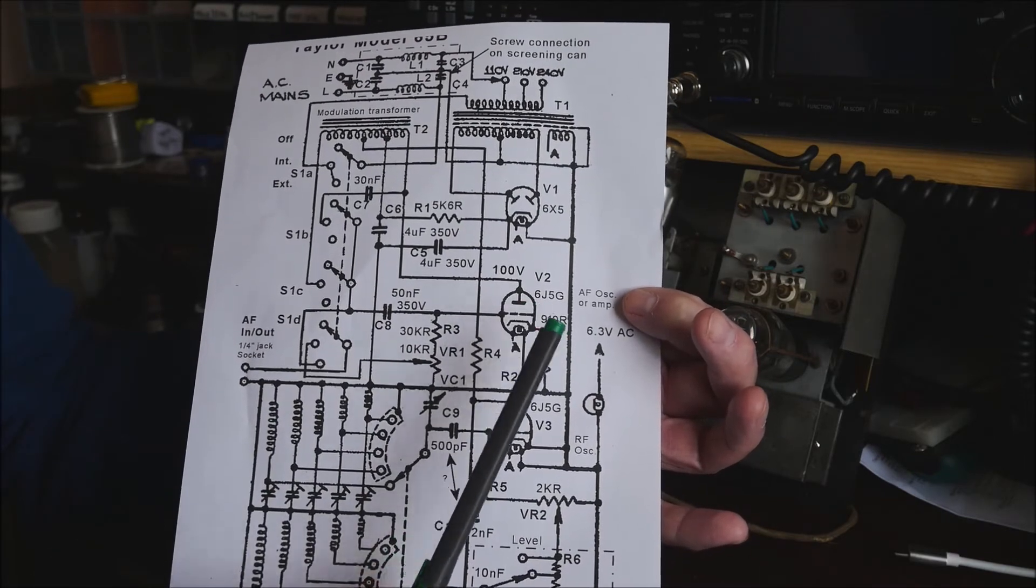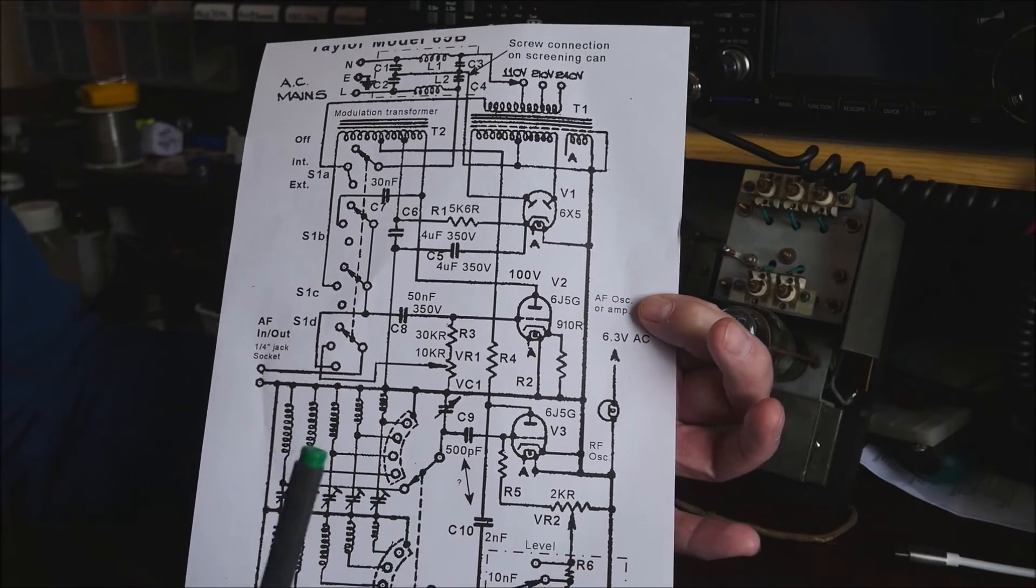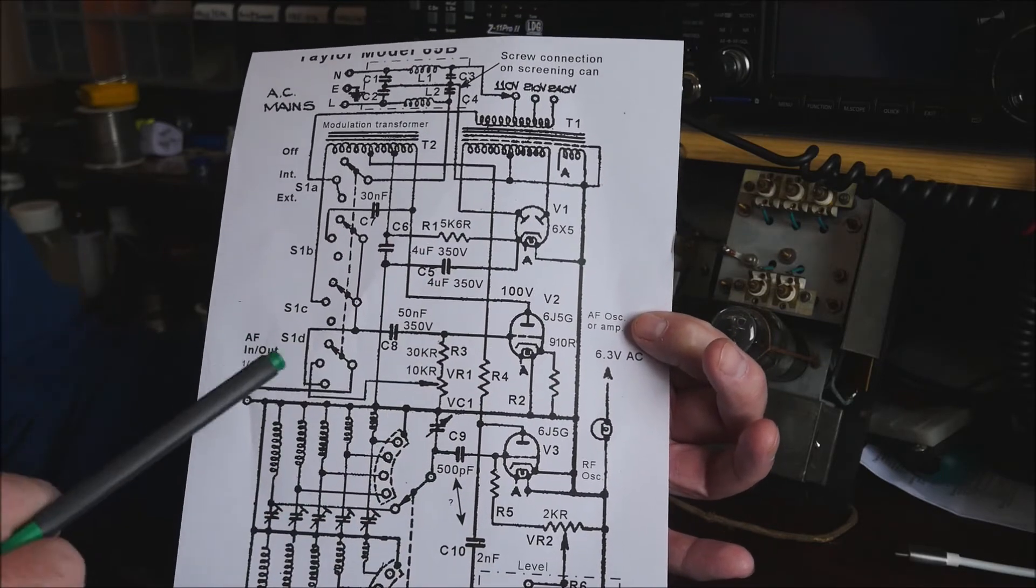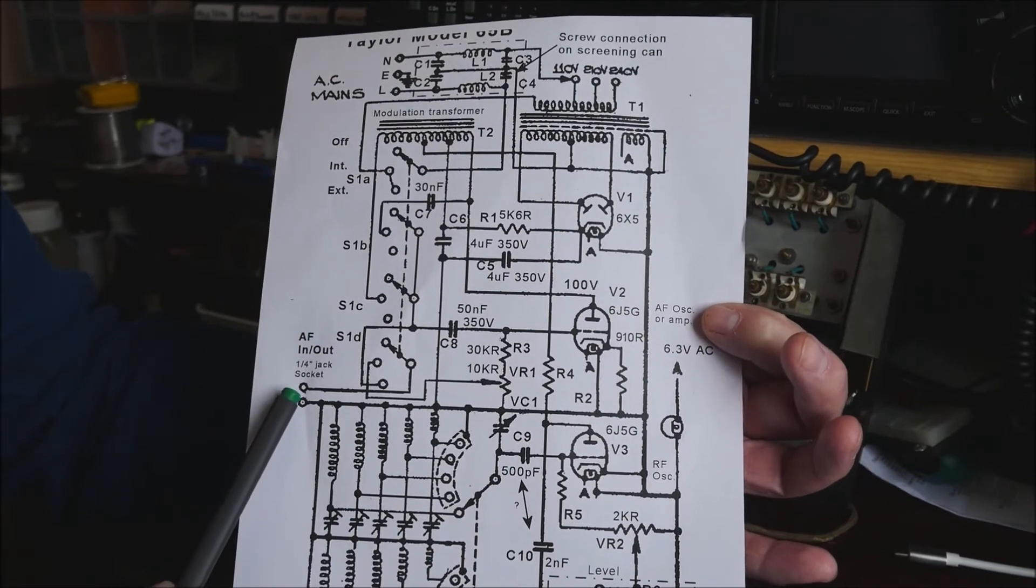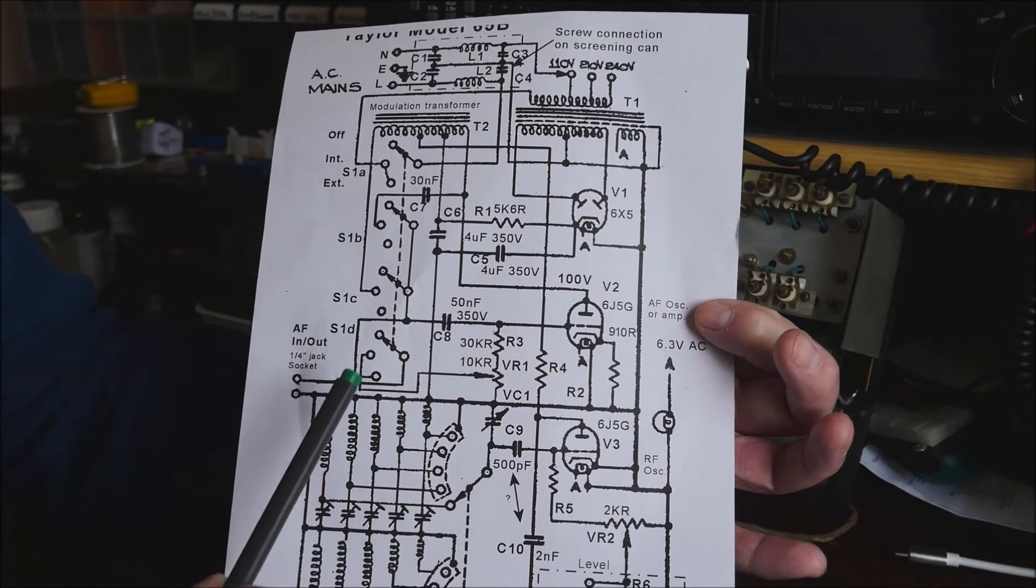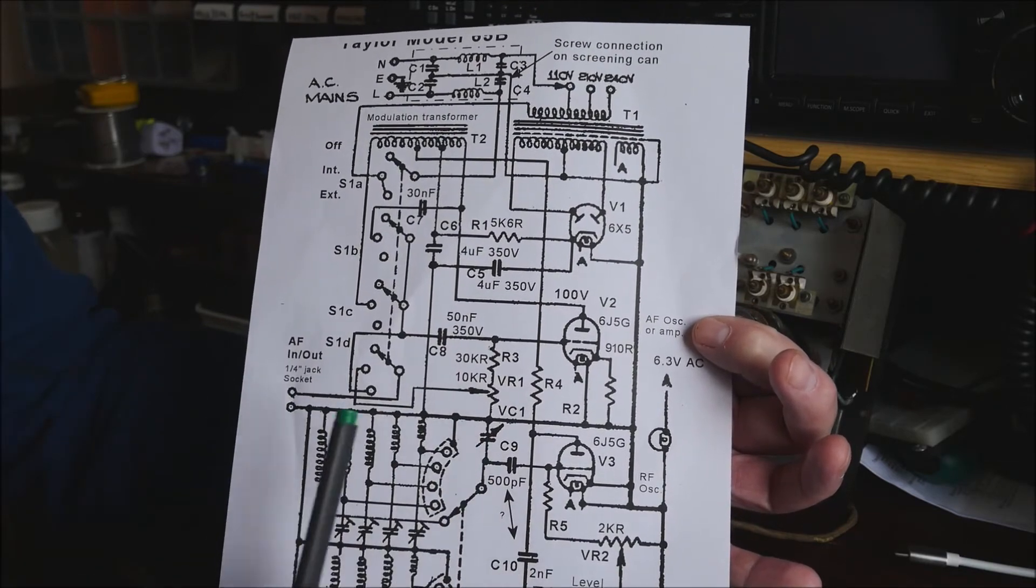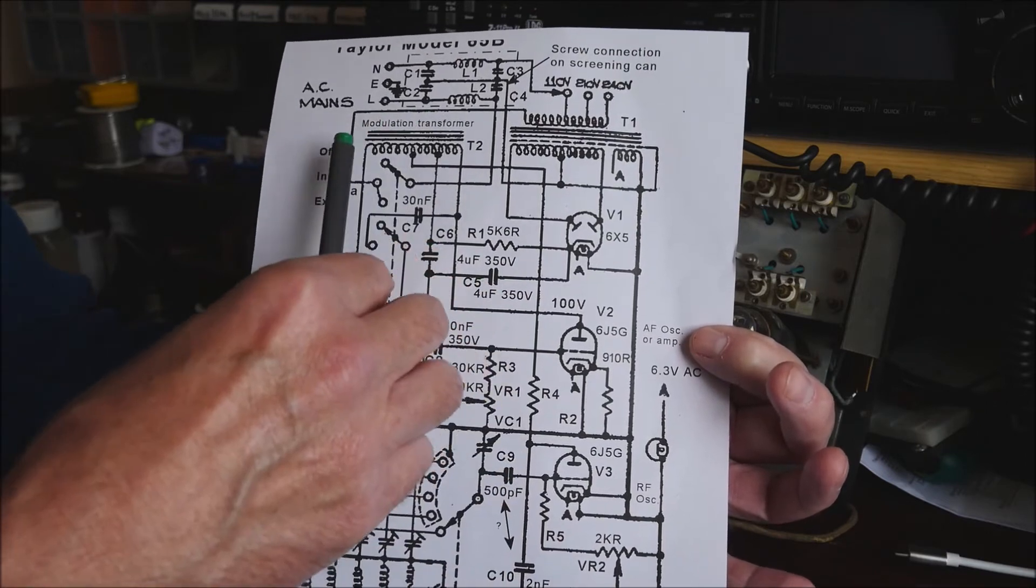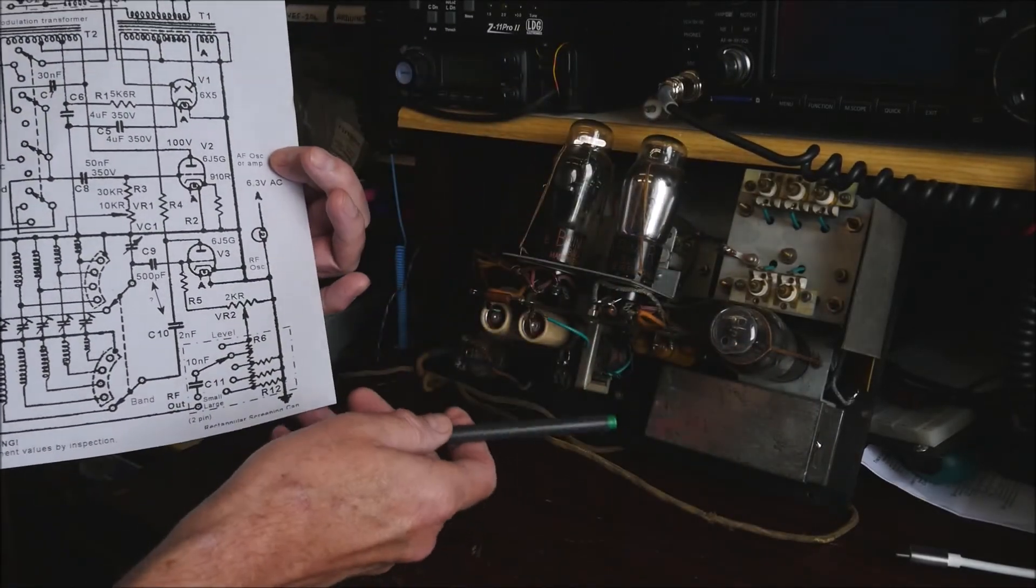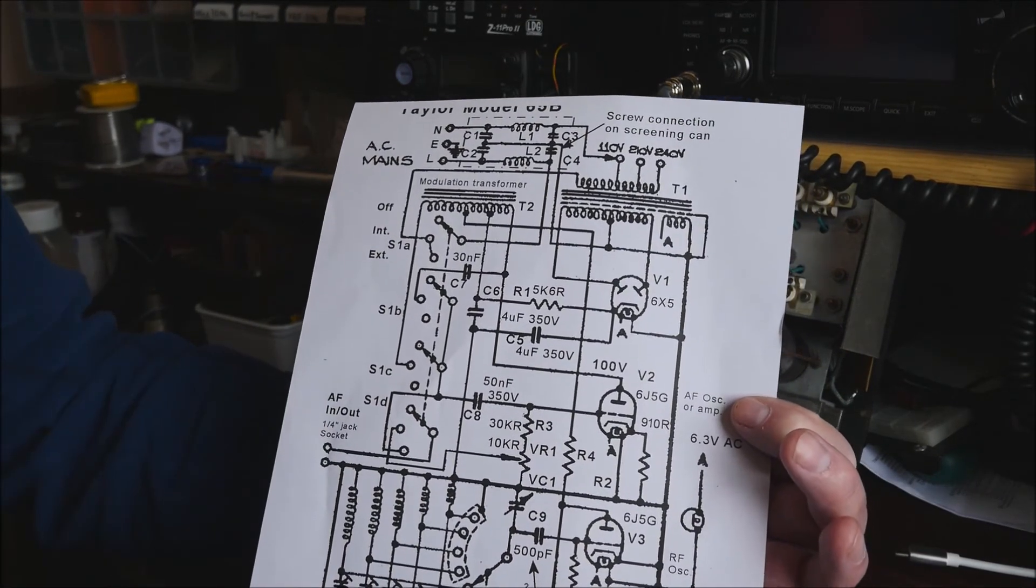Valve 2, another 6J5G, works as an audio oscillator at about 400 hertz. And it's possible to get the generator to produce RF modulated with 400 hertz where this valve works as an oscillator. Or it's also possible to feed an audio signal in to the jack on the front panel. This valve, when that switch is in the appropriate position, then acts as an amplifier. And it's either the internal signal or the 400 hertz oscillation are combined with the RF signal in the modulation transformer, transformer 2, which is a small transformer down there. And again that gets fed back to the output.